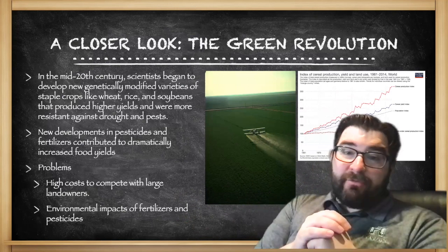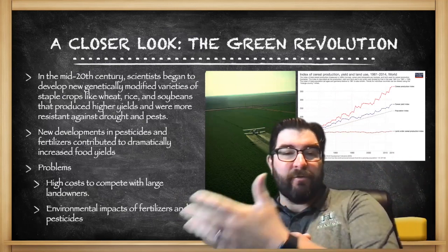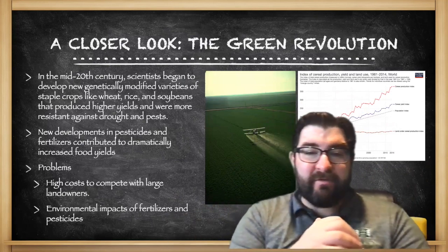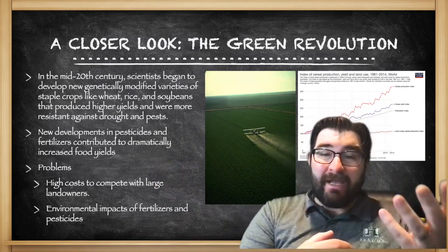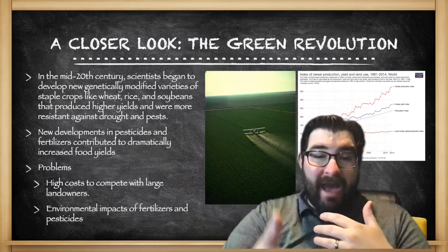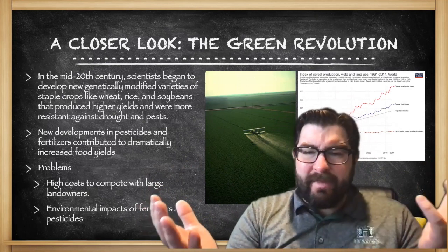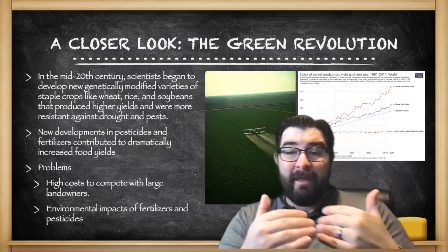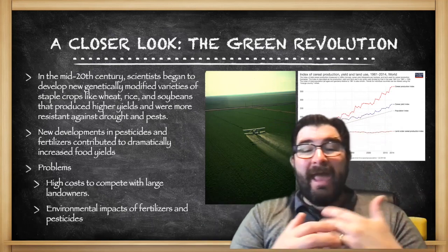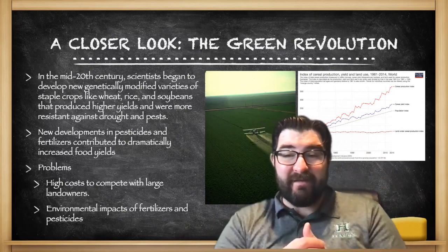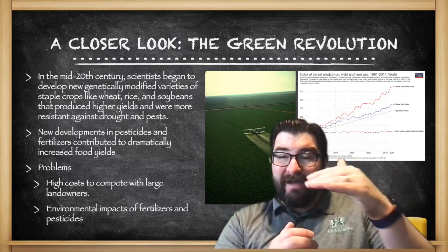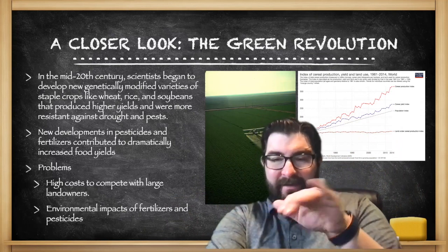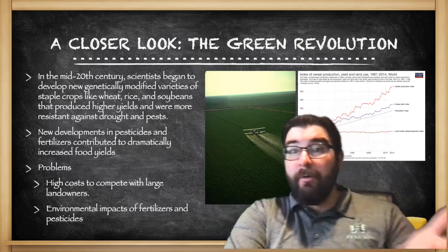The Green Revolution: in the mid-20th century, American scientists began to develop new genetically modified varieties of staple crops like wheat, corn, rice, and soybeans that produce higher yields and were more resistant against droughts and pests. New developments in pesticides and fertilizers also contributed to dramatically increased food yields. Though the Green Revolution is not without its problems — high costs make it hard for small farmers to compete with large corporate landowners, and there are environmental impacts from fertilizers and pesticides — we have even more food being produced on the same amount of land despite the world's population growing to over 7 billion people.